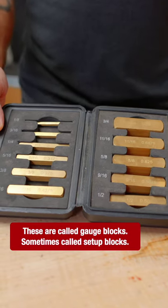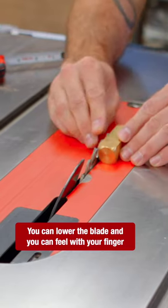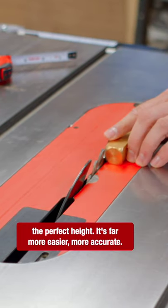These are called gauge blocks, sometimes called setup blocks. You can lower the blade and you can feel with your finger the perfect height.